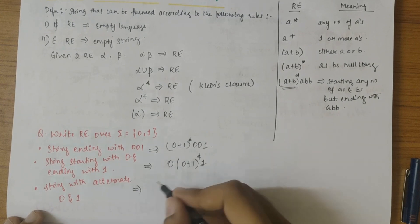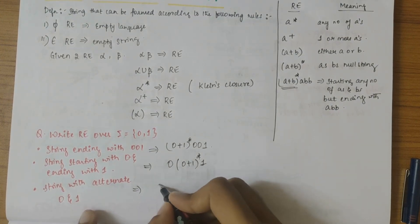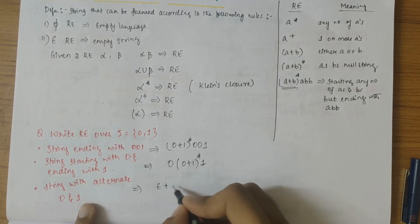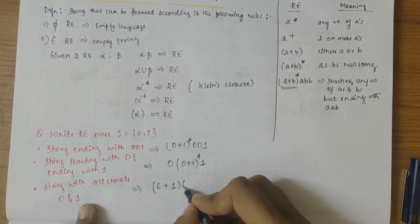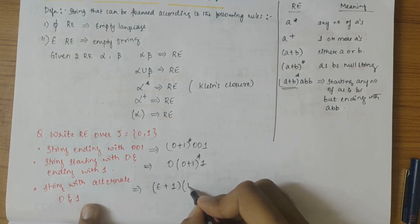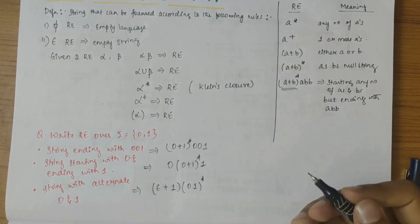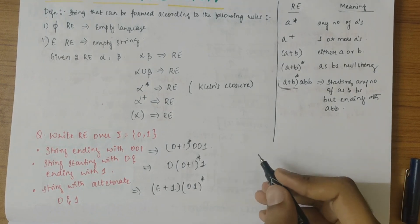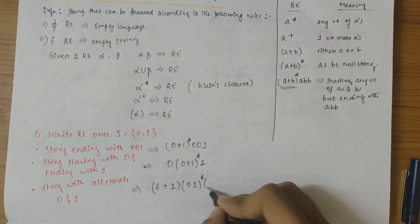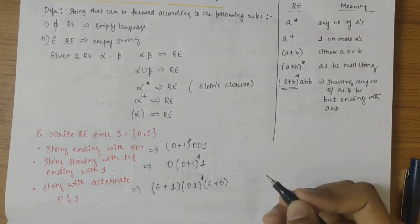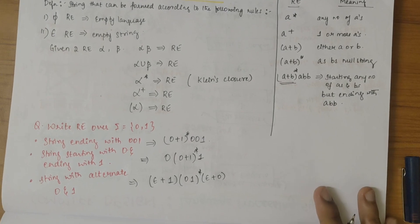For a string with alternating 0s and 1s, it has to start with either 0 or 1, so we write (epsilon + 1), then (0-1)-star — any number of 0-1 pairs — followed by (epsilon + 0). This captures alternating 1s and 0s.